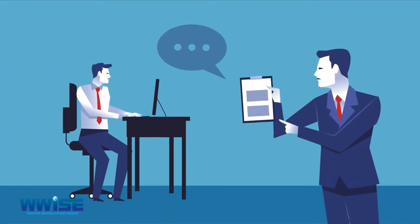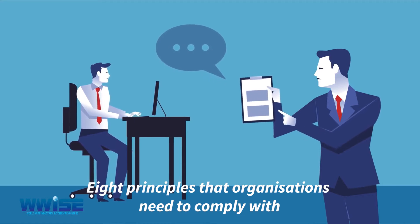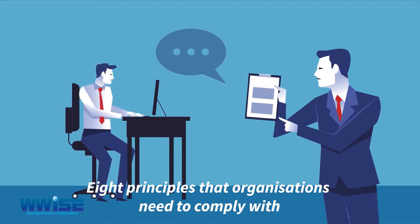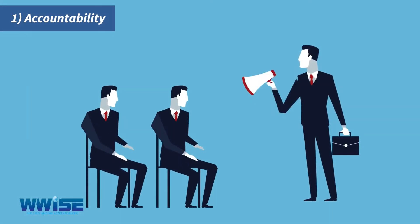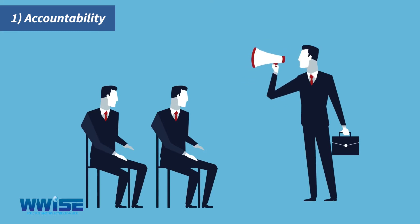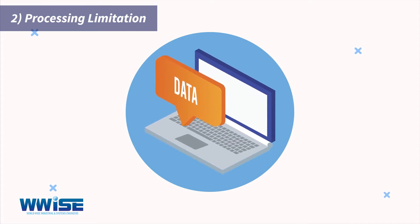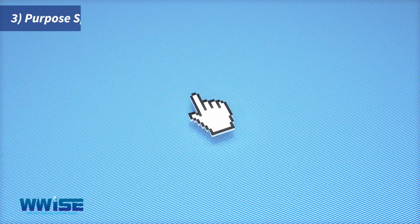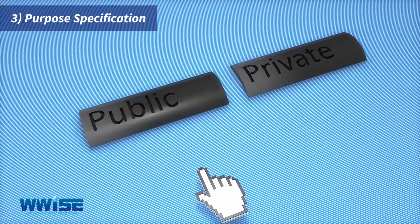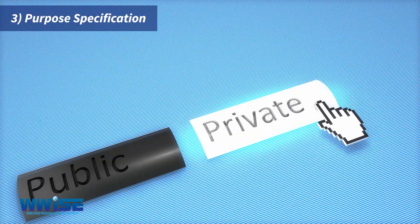The Act introduces eight principles that organisations need to comply with in order to process information lawfully. Accountability: identifying who is responsible for applying the eight principles in the organisation. Processing limitation: are you using personal information for specified purposes only? Purpose specification: informing data subjects what you will use their information for.